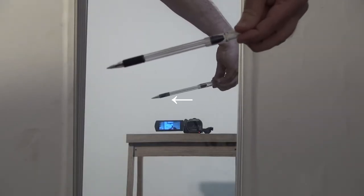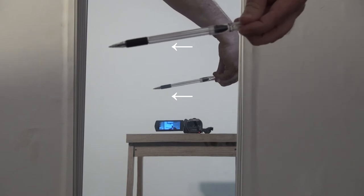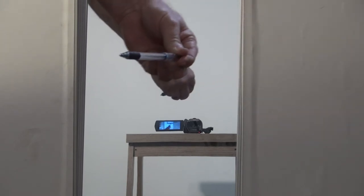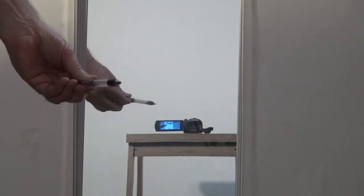If we point the pencil toward the left, the mirror image of it is pointing toward the left. If I point the pencil directly at the camera, the image points directly away from the camera.